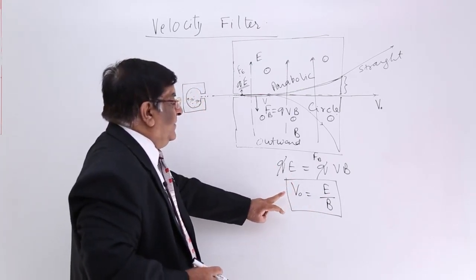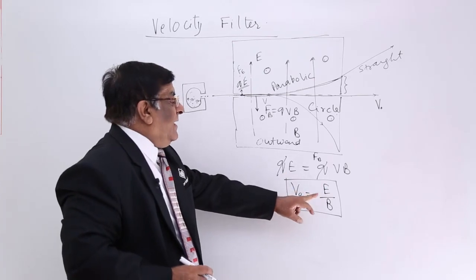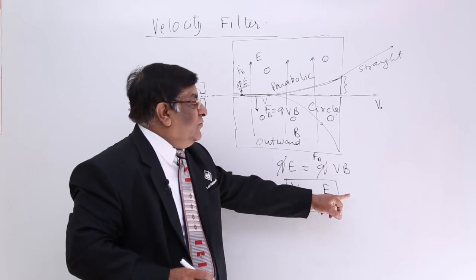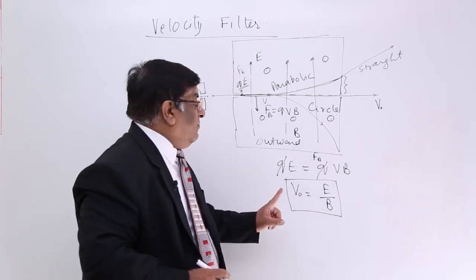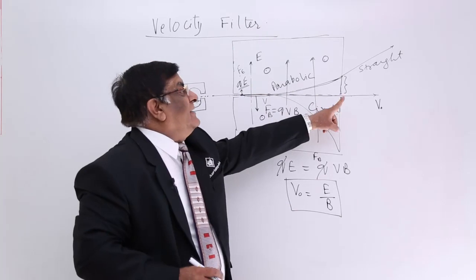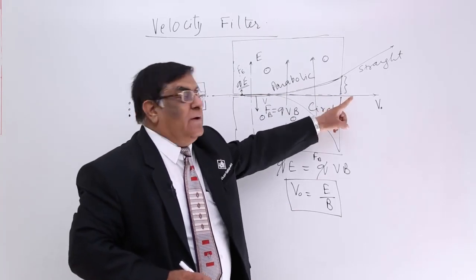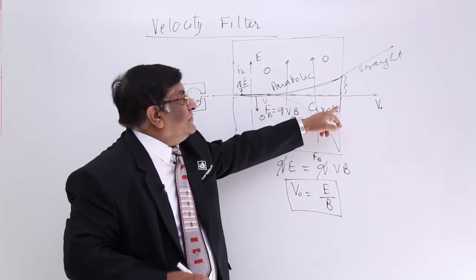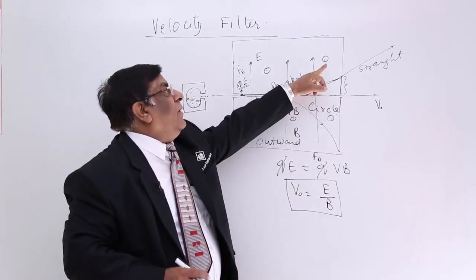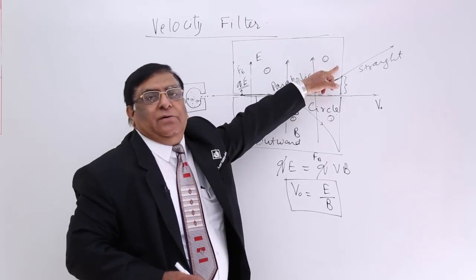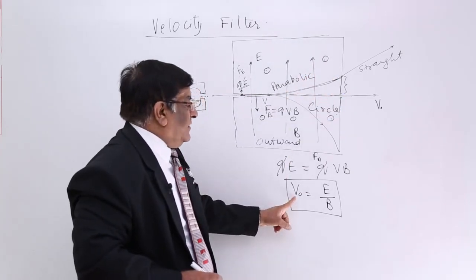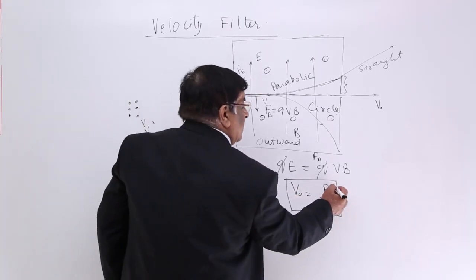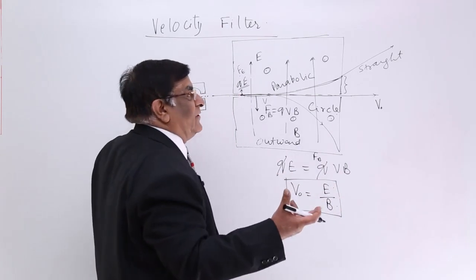So if we keep E divided by B, give it a particular value. Let's say if this is equal to 15000, then what will be the velocity of all these charges? Answer: 15000. More than that will go down, strike this wall. Less than that will go up, strike this wall. So the one which is passing through this has a particular velocity which is equal to E upon B, and the setting of E and B are controlled by us.